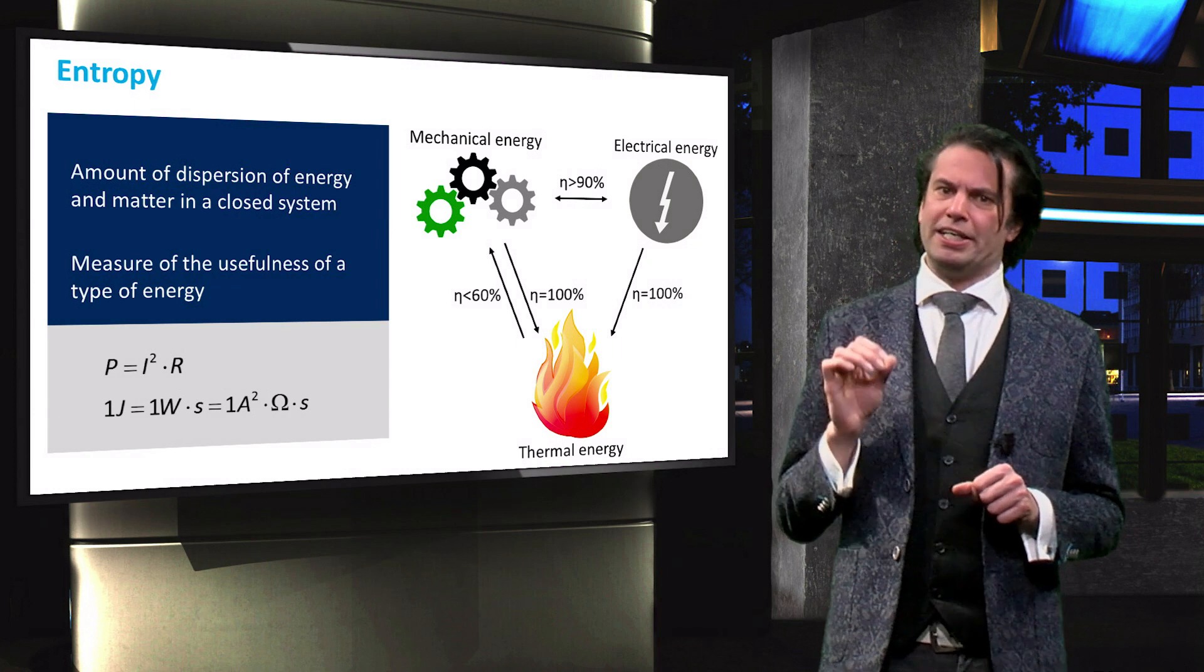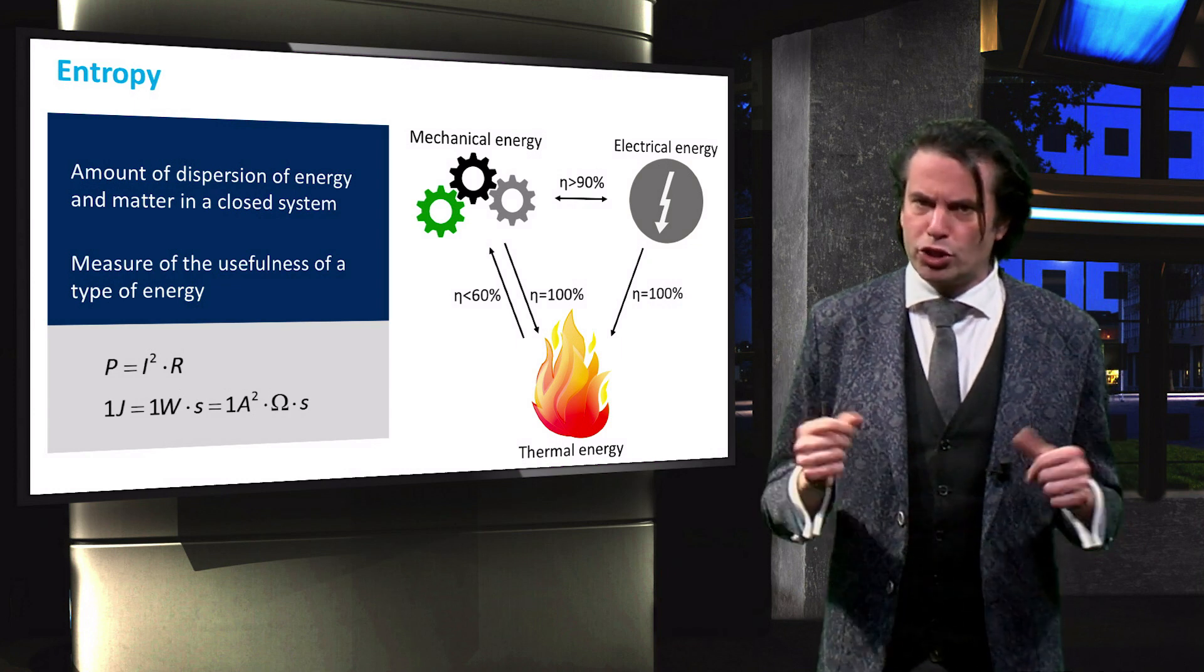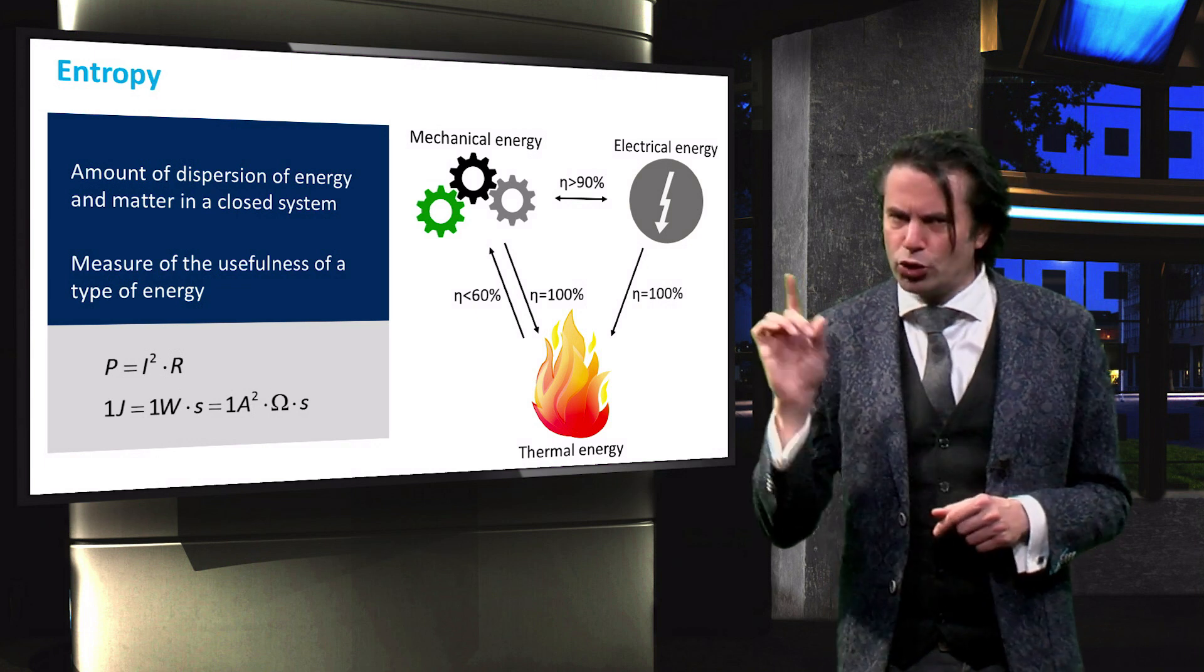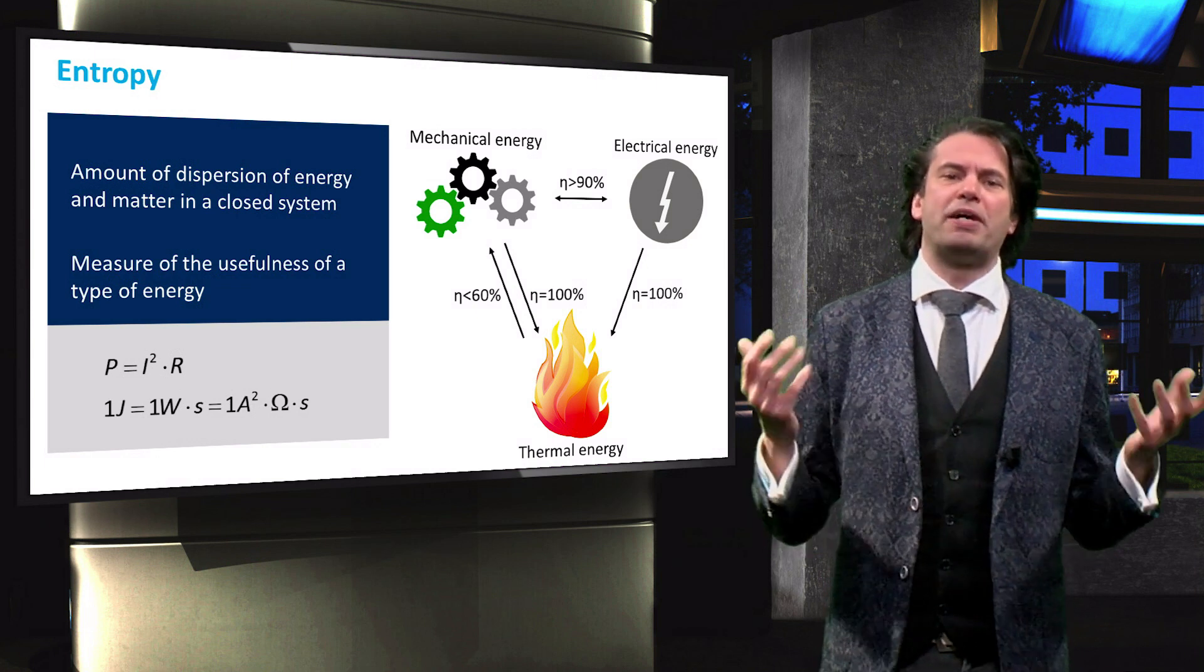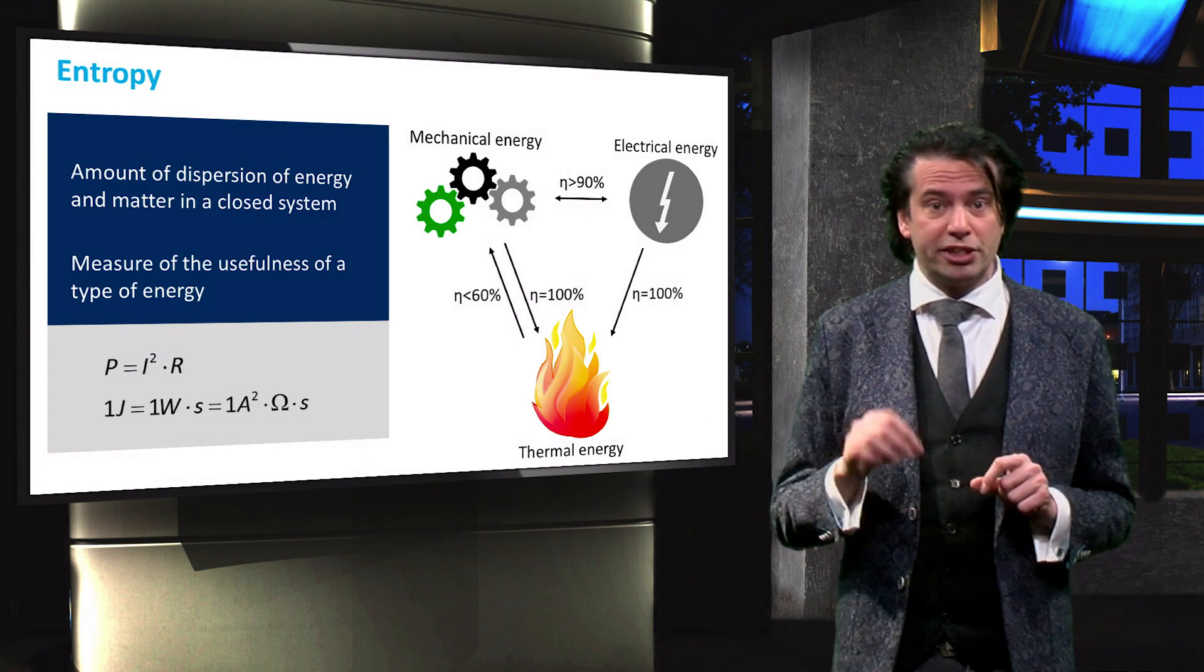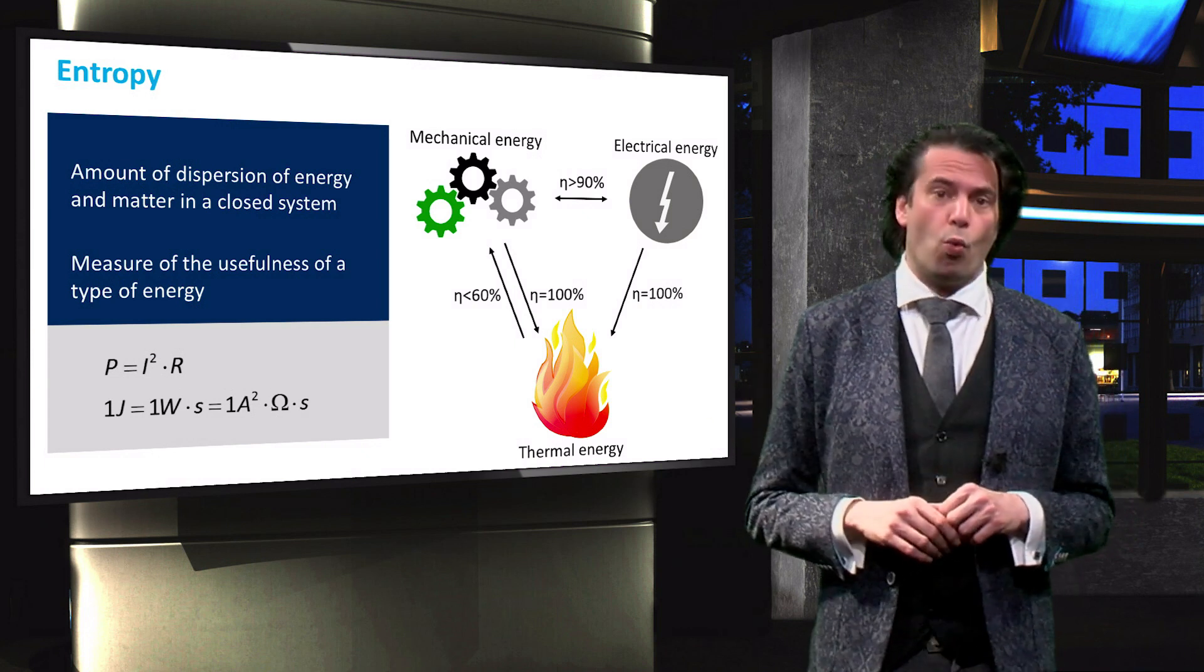The amount of dissipated heat is equal to the current squared times the resistance of the material. One joule of thermal energy is therefore dissipated when an electric current of 1 ampere passes through a resistance of 1 ohm for 1 second.